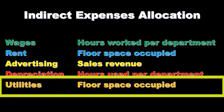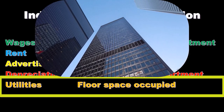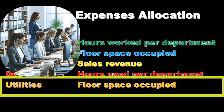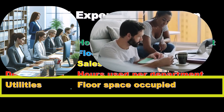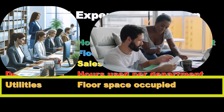For utilities, we might pay one utility bill for the whole building with three departments inside. A common way to allocate utilities is by floor space occupied, since larger floor space would tend to use more utilities. However, if one department uses significantly more utility than others for some reason, an adjustment might be needed. If all departments are doing normal office activities, floor space is a reasonable and relevant activity base to use.